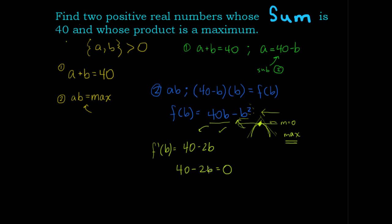Subtract 40 from each side, divide by negative two, and you find b is equal to 20.